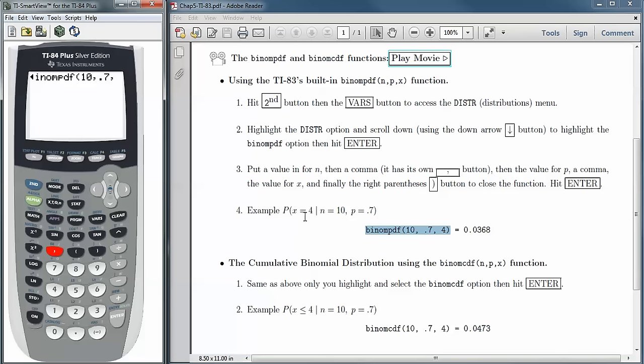And then the number of successes I'm looking for is 4. So I put a 4 in there. Close it off with the right parentheses and hit Enter. And it gives that probability. When you round that to three significant digits, you get this answer over here, 0.0368.